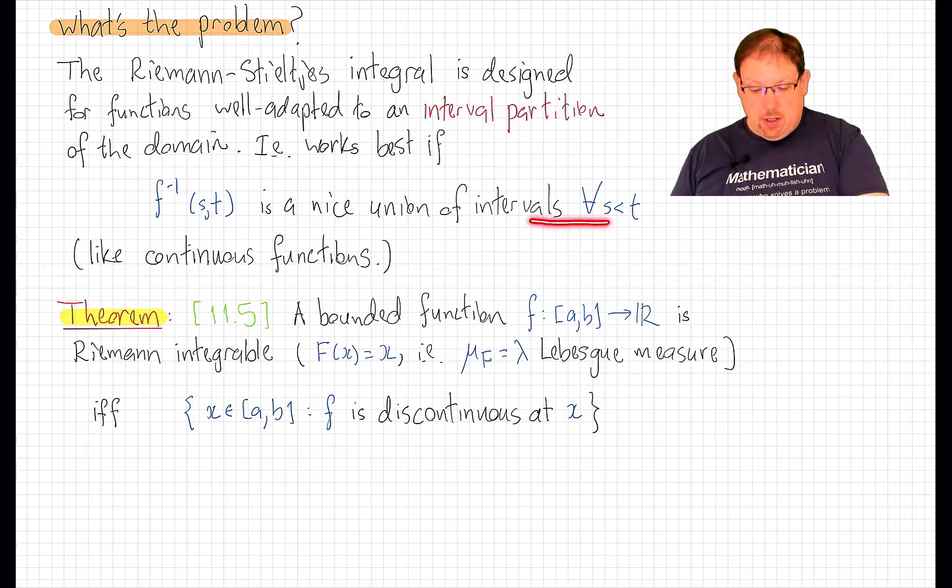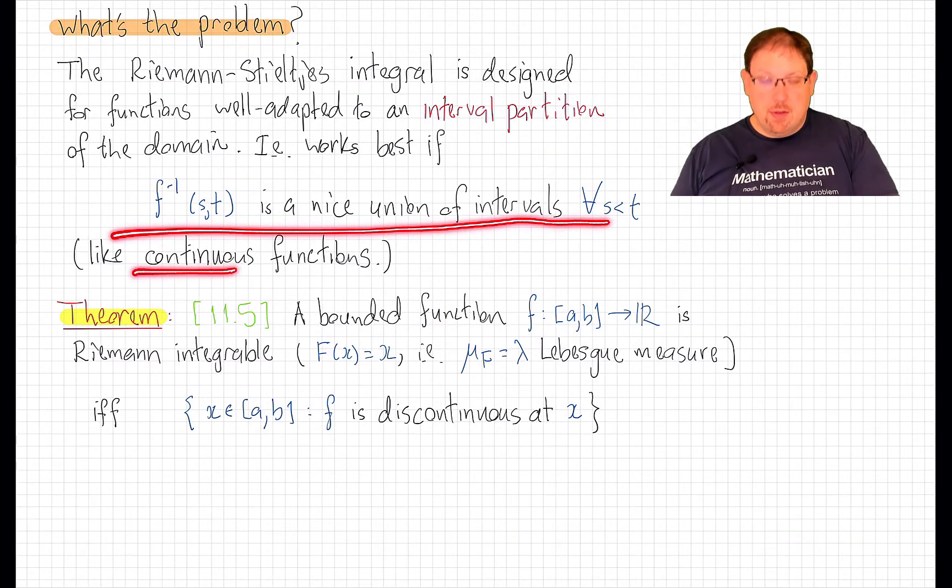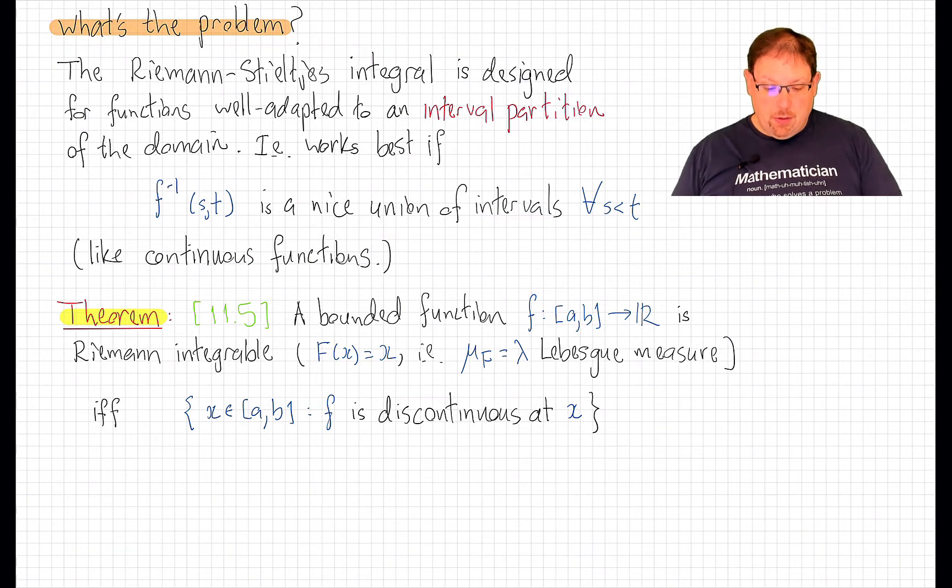So this will certainly be true for continuous functions. After all, for a continuous function, the pre-image of an open set is an open set, and we know that open sets in the real line are countable disjoint unions of open intervals.